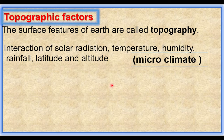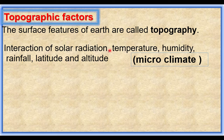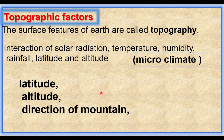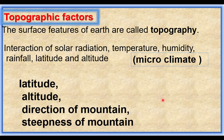Microclimate is the specific climatic variation in a small area. A climatic variation in a small area is called a microclimate, influenced by these factors. The important topographic factors are: latitude, altitude, direction of mountain, and steepness of mountain.